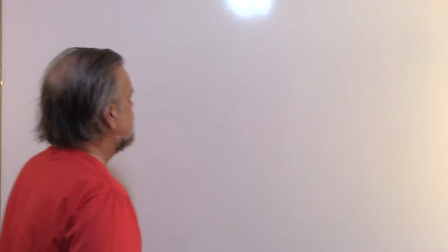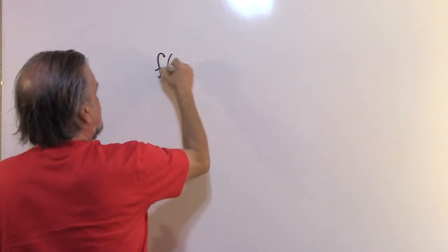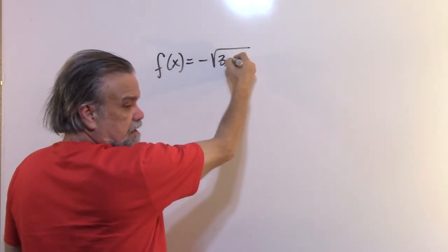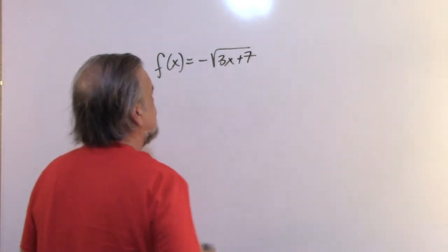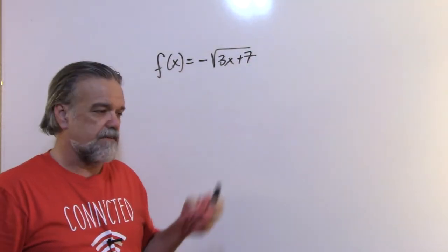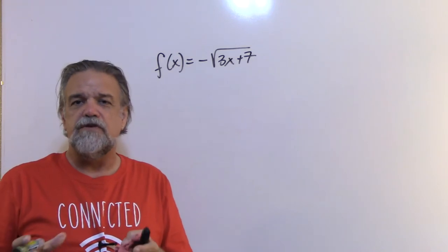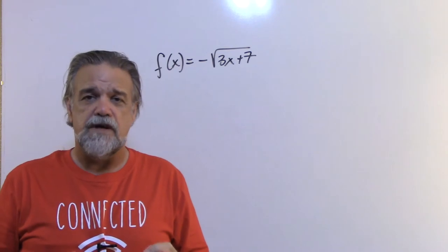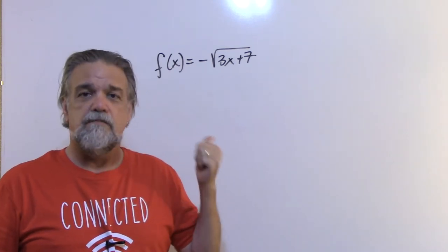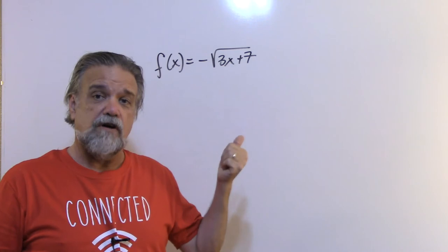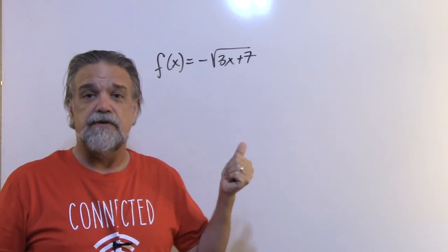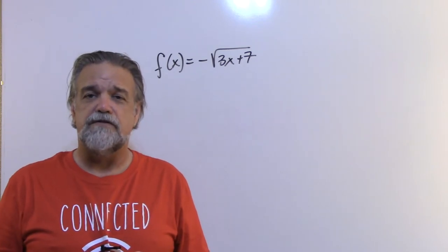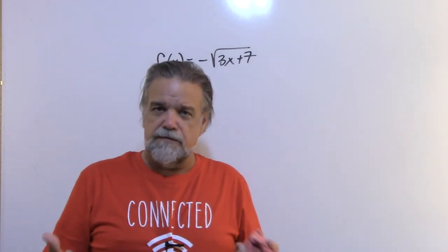Let's take f(x) = -3x + √(3x + 7), defined as a function over the real numbers. That means x must be a real number and f(x) must also be a real number. Now I'm looking for the domain and the range of this function.